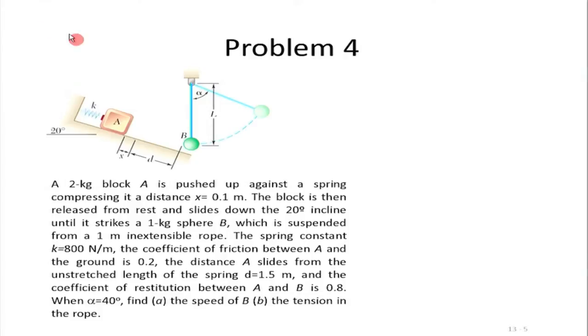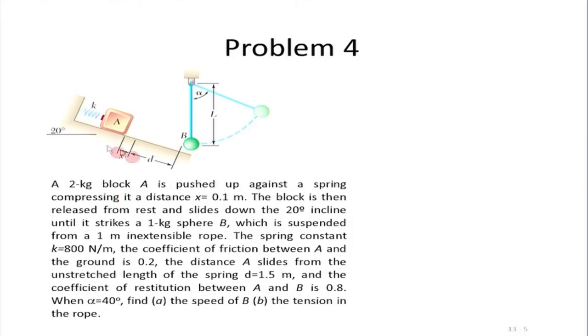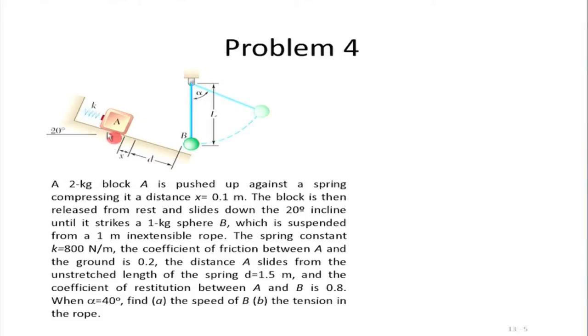The last problem is very interesting — a combination requiring the work-energy theorem, conservation of momentum, and normal and tangential directions. Solving this problem will make all the concepts we have discussed completely clear. A 2 kg block is pushed up against a spring compressing it 0.1 meters. We know the initial potential energy of the system — there are two components: one from the spring and one from gravity.